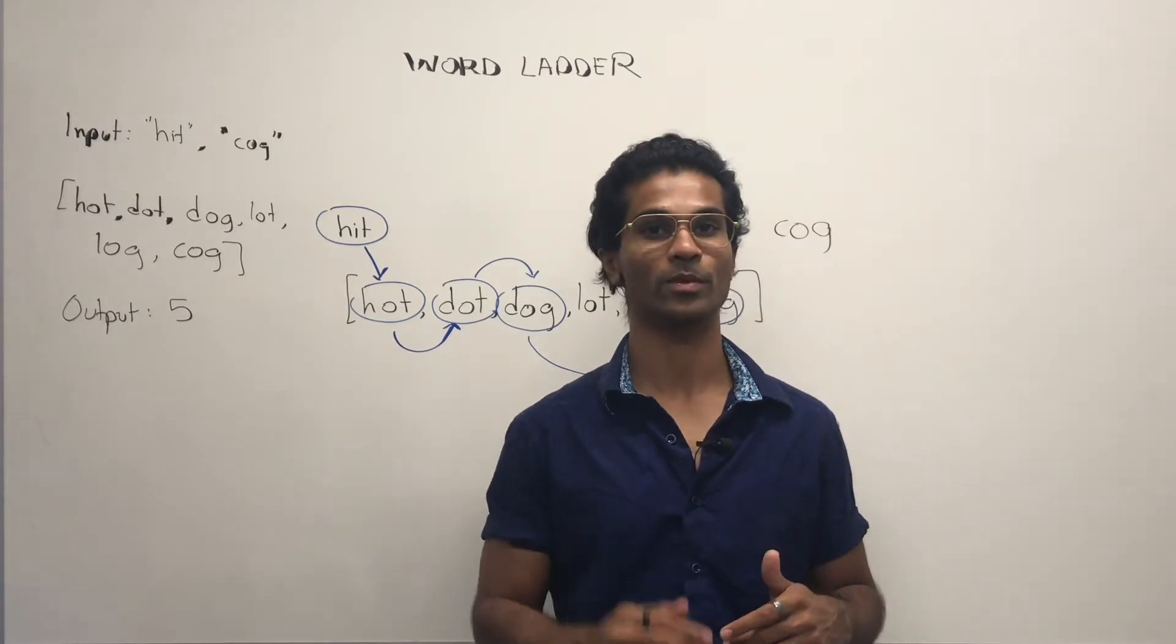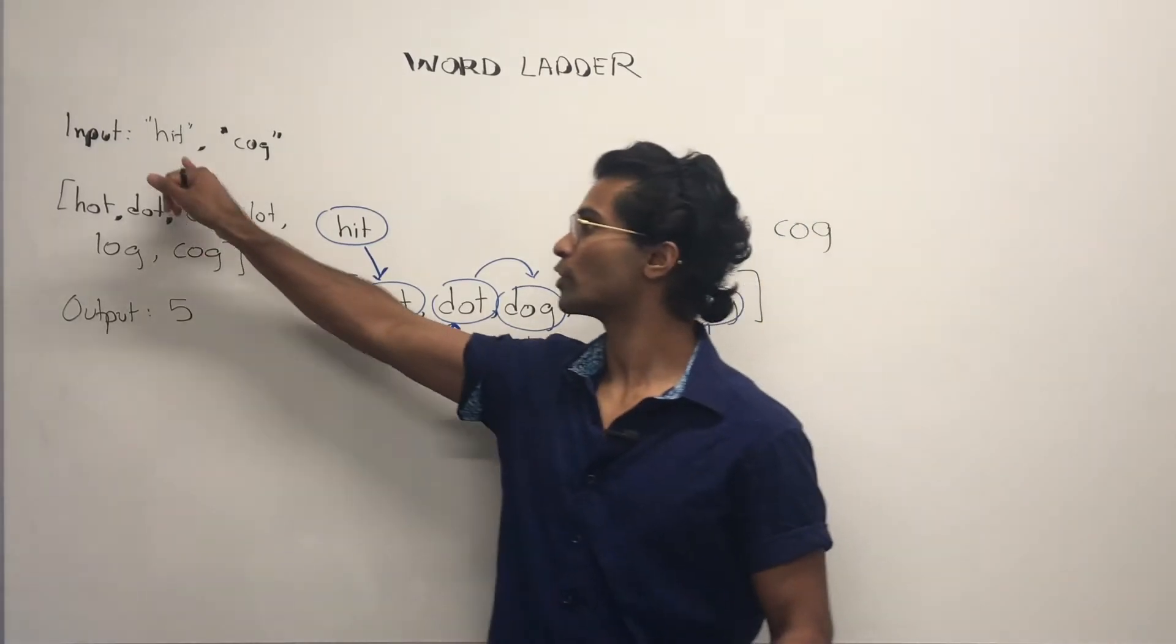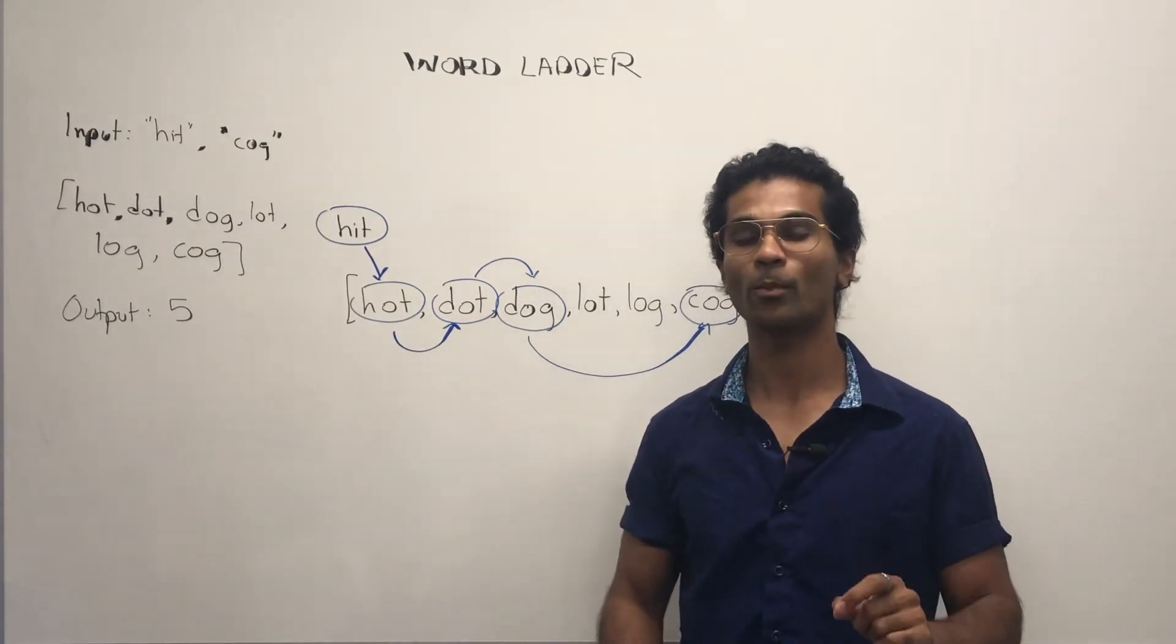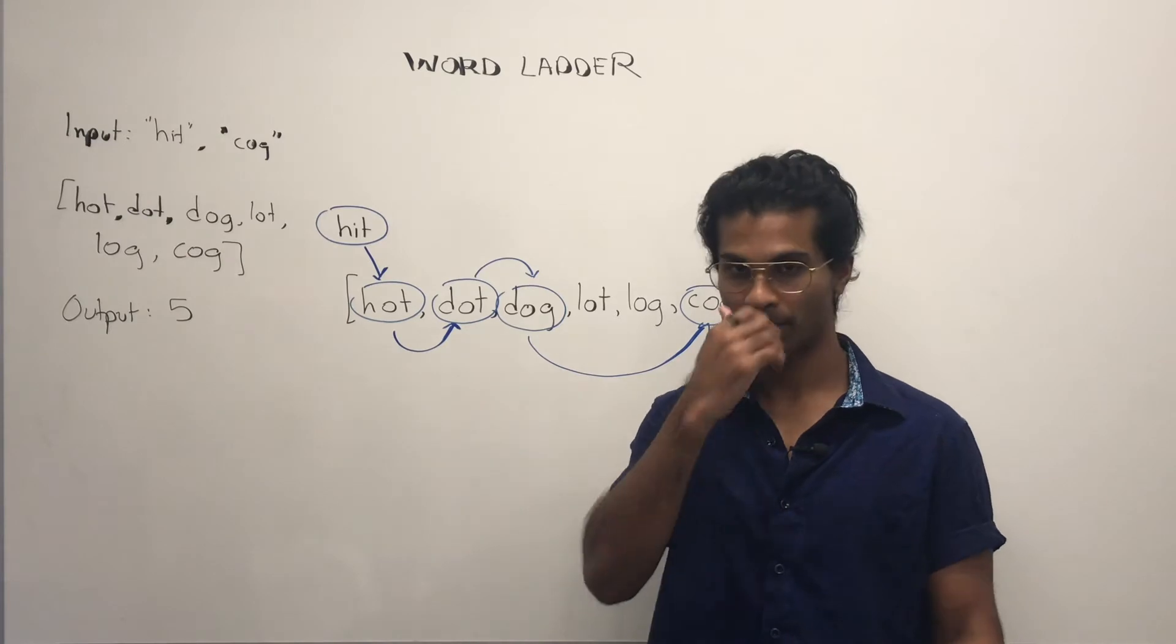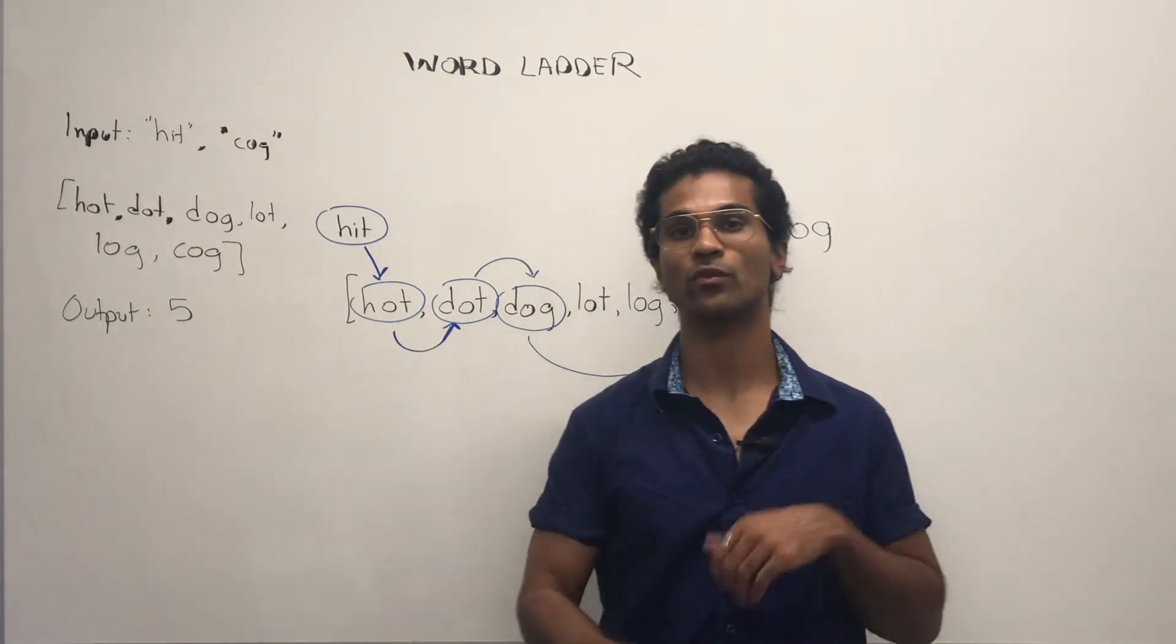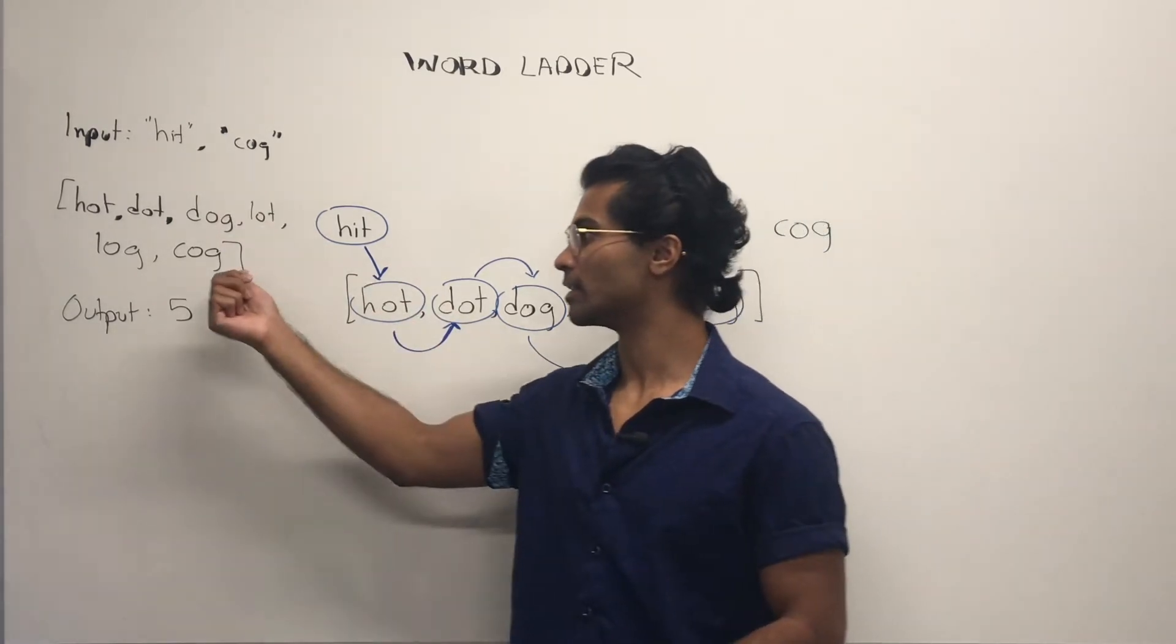The input is going to be two words and a list of words. So this is going to be our begin word and this is going to be our end word and the output is going to be an integer. Our job is to go from this word and transform it till it finally ends up as that one using the words in the list.